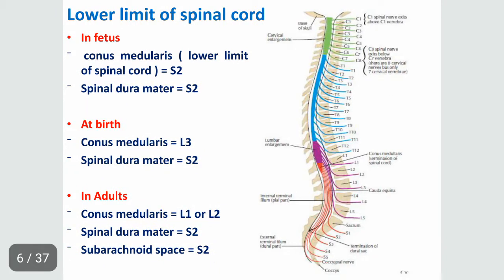Now we will talk about the lower limits of the spinal cord. The position of the spinal dura mater remains constant across three periods — in the fetus, at birth, and in adults — at the S2 level. What changes is the position of the conus medullaris, which is the lower limit of the spinal cord. It is at S2 in the fetus, at L3 at birth, and at L1 or L2 in adults, depending on whether the spine is in a flexed or extended position.